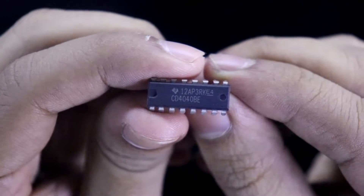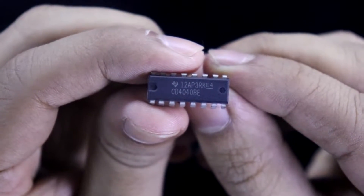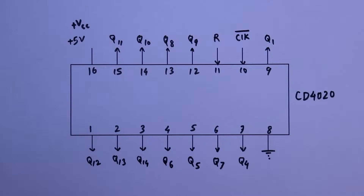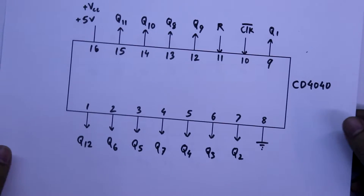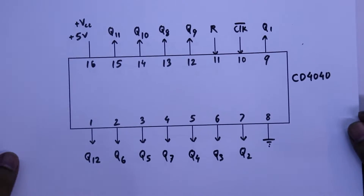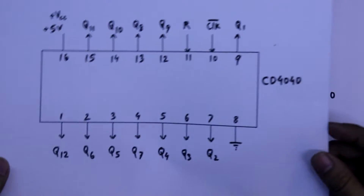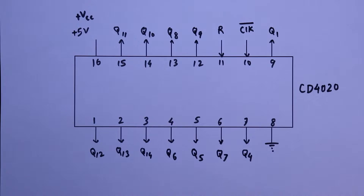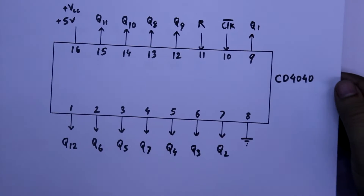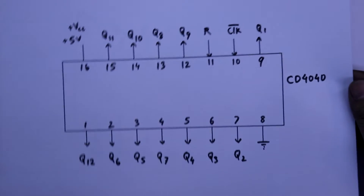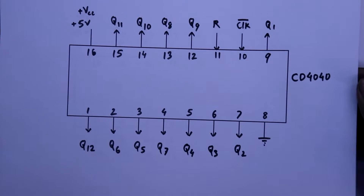This is the IC CD4040. In the last video we have seen CD4020. The only difference between CD4020 and CD4040 is that 4020 is a 14-bit binary counter and 4040 is a 12-bit binary counter.